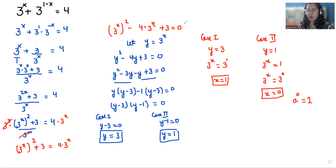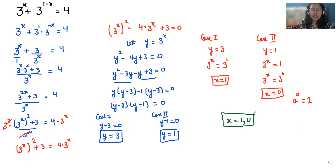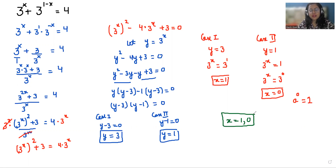So we have two values of x: x can be 1 or 0. I hope it's clear and easy to solve. If you find it useful please give us a thumbs up and do subscribe to my channel. Stay tuned.